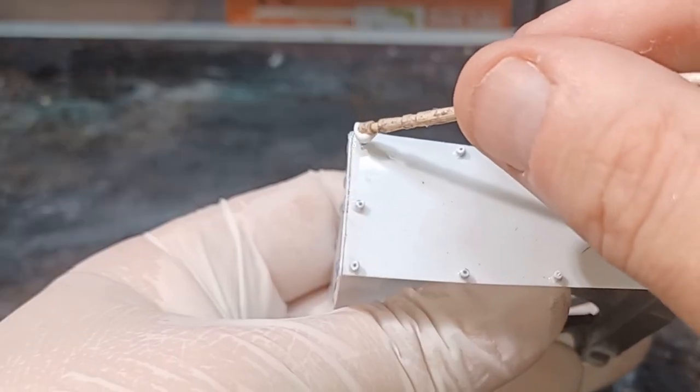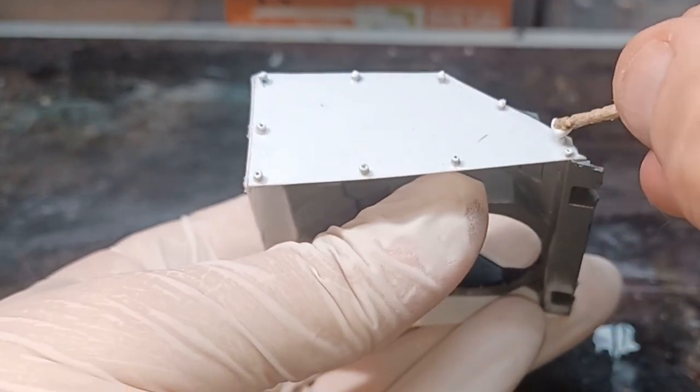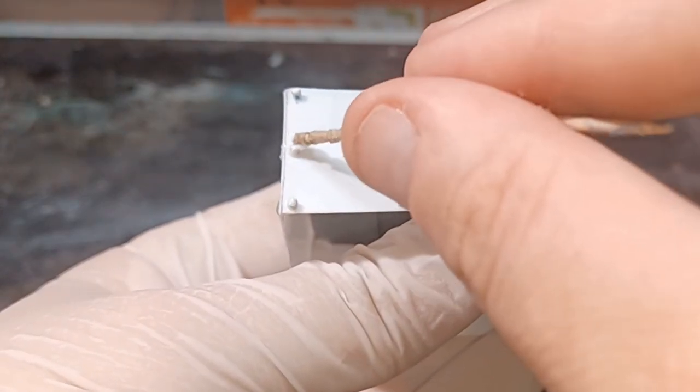So with that PVA glue fully dry, again I just take my toothpick and some PVA glue and just going around, putting a little bit on the top of the rivet, letting that settle into a nice round top.